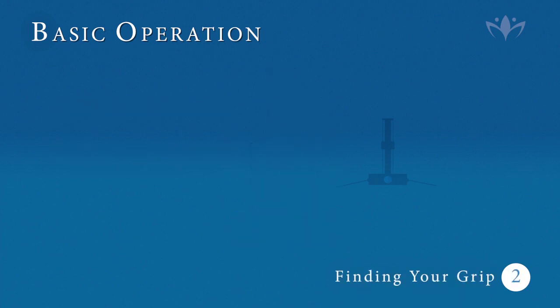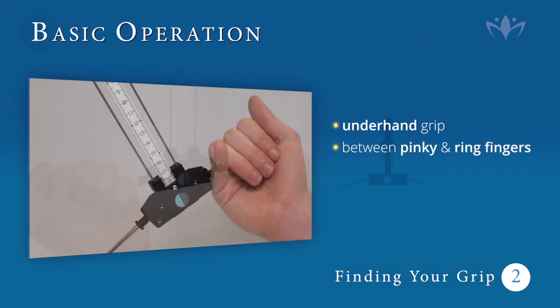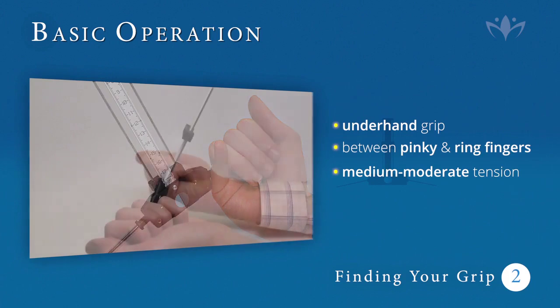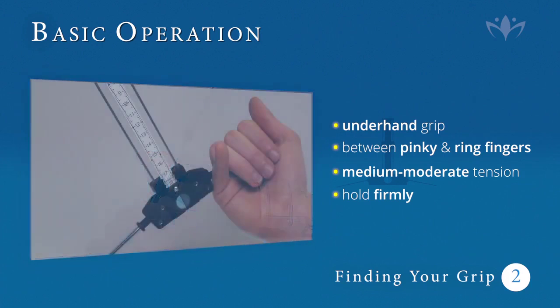Two, gripping your Lecher instrument. Assume an underhand even grip, grasping the holding rods between your pinky and ring fingers with a medium to moderate amount of tension. You should be holding your Lecher firmly enough to prevent it from falling due to gravity, but not so tightly that it cannot move whatsoever. Each practitioner will find a unique yet comfortable way to grip their instrument.